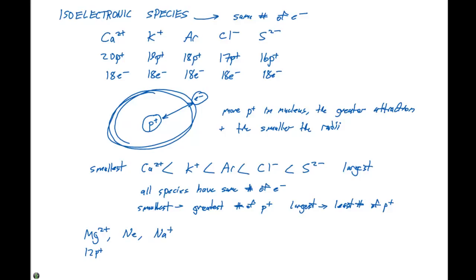Magnesium has 12 protons and 10 electrons. Neon has 10 protons and 10 electrons. Sodium plus has 11 protons and 10 electrons.